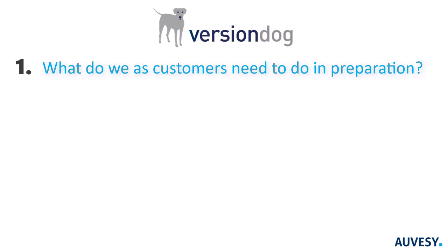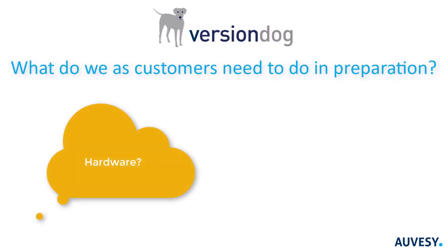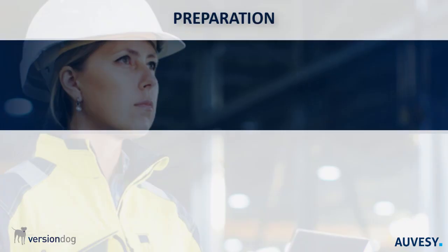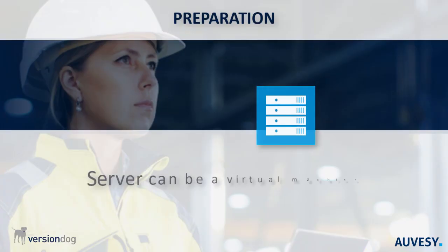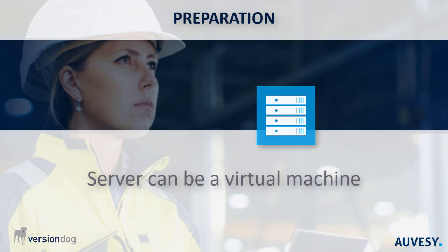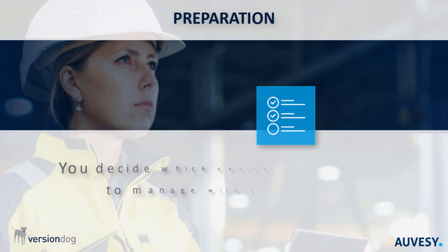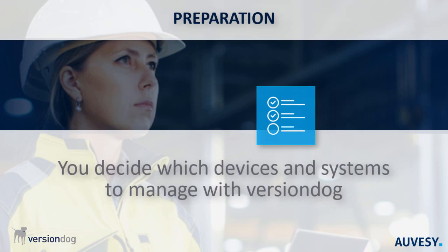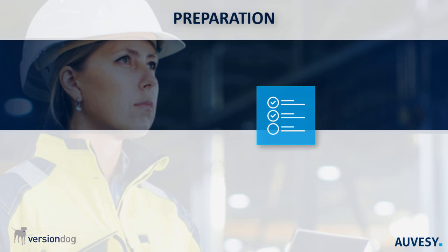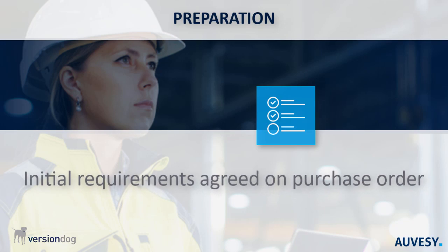What do we as customers need to do in preparation? Do we need a lot of hardware? Will cost escalate? As far as hardware is concerned, you will need a server, but the requirements for the VersionDog system are not high. On the question of escalating costs, the price that we quote you will depend on the devices and systems that you want to manage with VersionDog. We will help you identify all of your requirements during the sales consultation and get them all in the purchase order. There are no hidden extras.